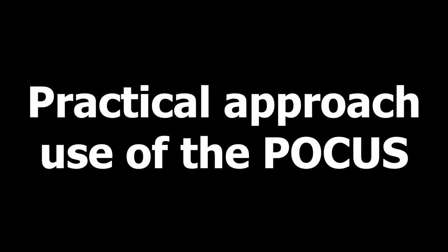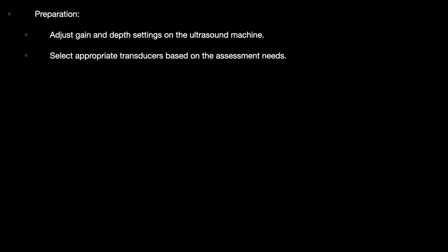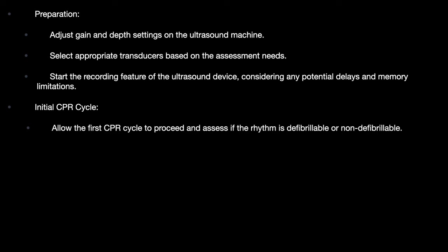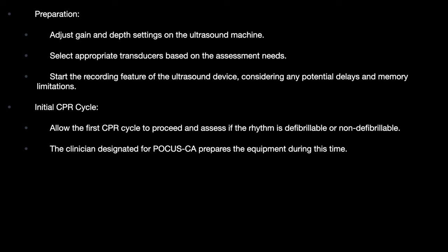The practical approach to using POCUS in cardiac arrest begins with preparation: adjust gain and depth settings on the ultrasound machine, select the appropriate transducer based on assessment needs, and start the recording feature considering potential delays and memory limitations. Initiate the CPR cycle. While CPR is ongoing, allow the first cycle to proceed and simultaneously optimize the machine for assessment. The clinician designates the cardiac arrest role and prepares the equipment during this time.